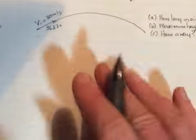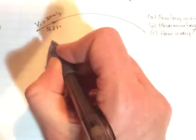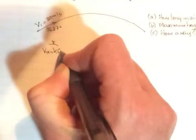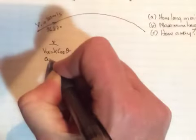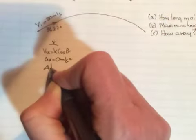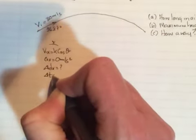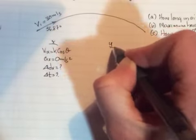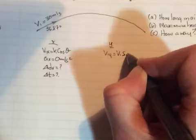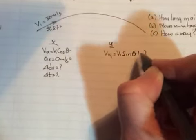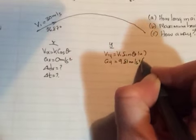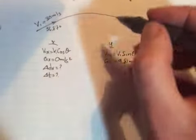So we would start, well, I guess by putting our givens down, VIX, VI cos theta, AX zero. We don't know delta DX. We don't know delta T. In the Y direction, VIY, VI sin theta up, AY, 9.81 meters per second squared down.